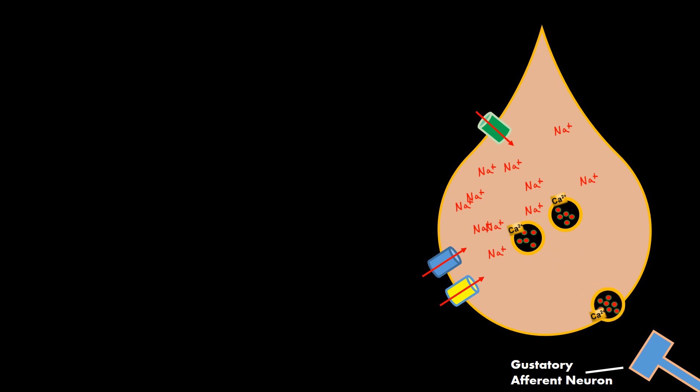And the SNARE proteins of the vesicle and the SNARE proteins of the gustatory cell will intermingle with each other so that they can fuse the vesicle and the gustatory cell membranes together, which will result in a dumping of the ATP molecules outside of the gustatory cell. So when this happens the ATP is going to travel to a gustatory afferent neuron which is specific to this gustatory cell.